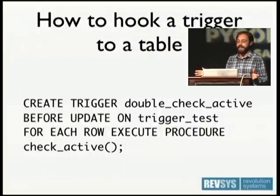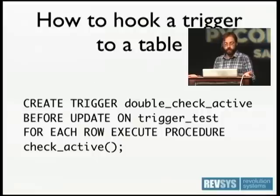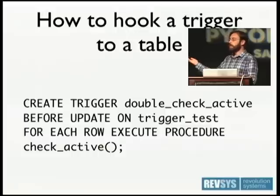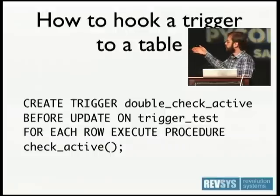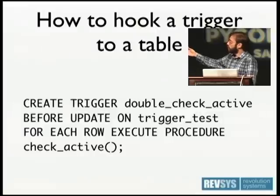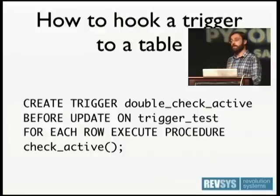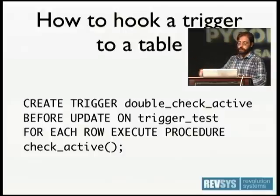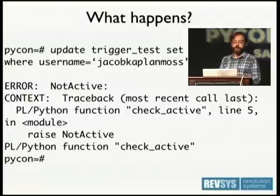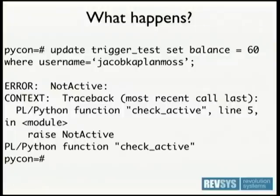You hook this to a table with a CREATE TRIGGER statement. You give it a name — I called it 'double_check_active' — and you say either before or after some operation: INSERT, UPDATE, or DELETE on a table. You can say FOR EACH ROW or FOR EACH STATEMENT. Then EXECUTE PROCEDURE check_active. When you try to update inactive user Jacob, you actually get the Python exception that you would expect.